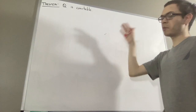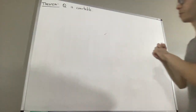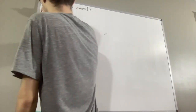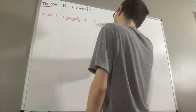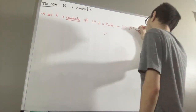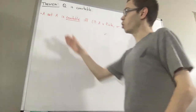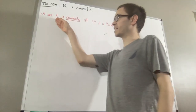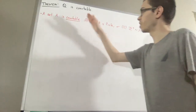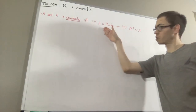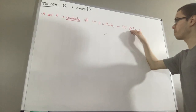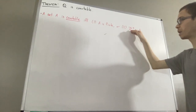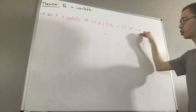Our definition of a countable set is as follows. Given a set A, we say that A is countable if A is finite, or there is a bijection from the set of positive integers to A.